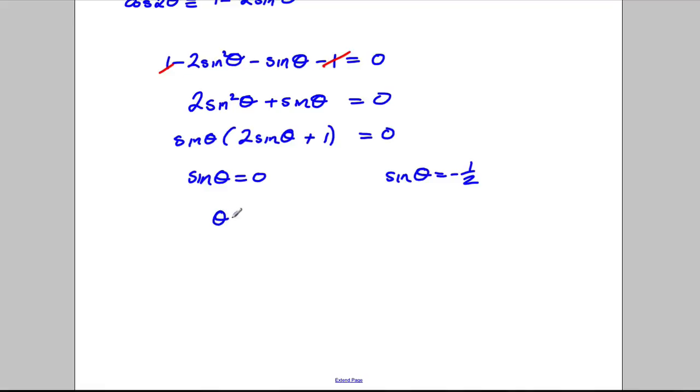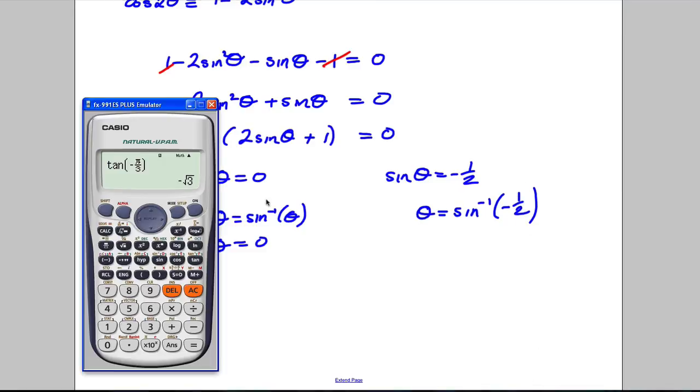So theta is the inverse sine of 0 and that would be 0. Or theta is the inverse sine of negative 1.5. And that would give inverse sine of negative 0.5. That gives negative pi by 6.